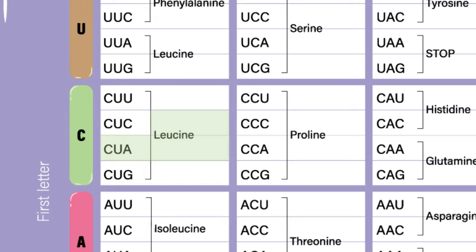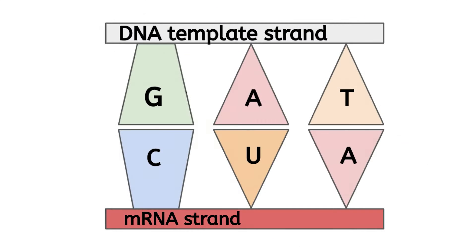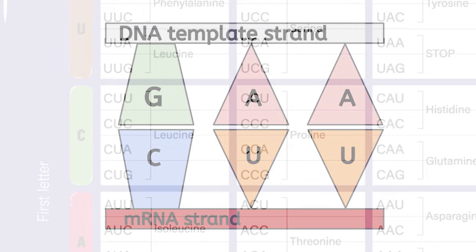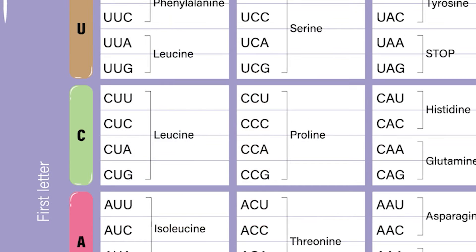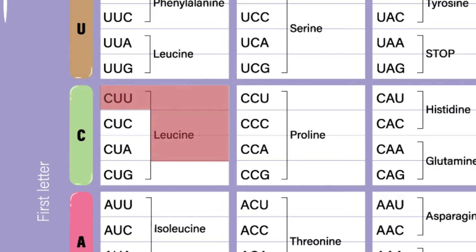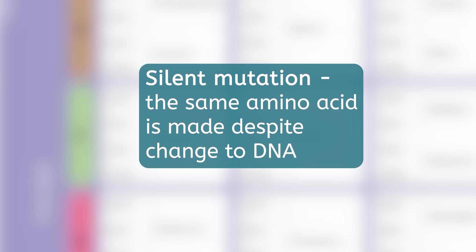Now what if, perhaps during DNA replication, the T in our template strand was accidentally replaced with an A? Now our template strand codon is GAA, which would be transcribed as CUU. This would be translated to the amino acid leucine. Well, that was fortunate — even with the mistake, we still made the same amino acid. When this happens, it's called a silent mutation.